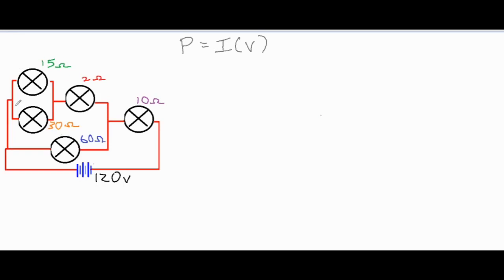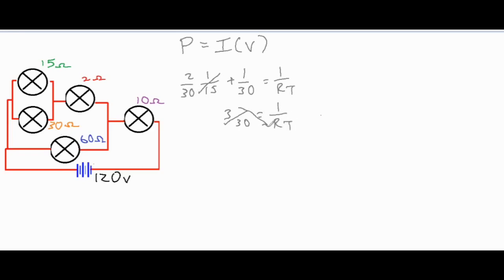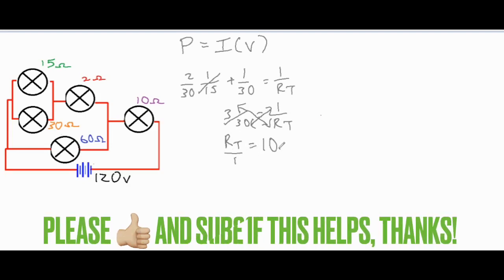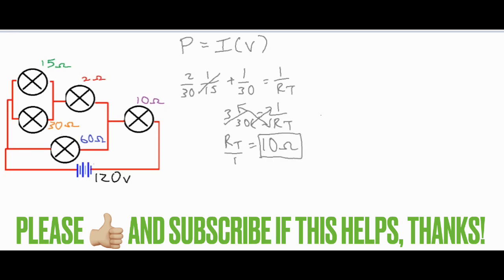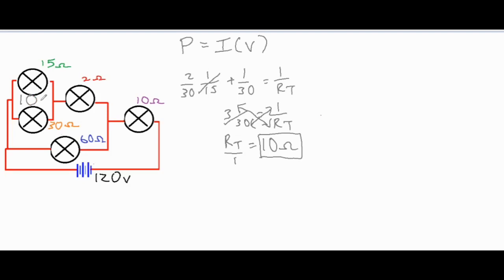Looking at our first parallel chunk, we have a 15Ω and 30Ω resistor. For a parallel circuit we add the inverses: 1/15 + 1/30 = 1/Rt. Using the lowest common denominator, that becomes 2/30 + 1/30 = 3/30 = 1/Rt. Cross-multiplying gives Rt = 30/3 = 10Ω. So this entire parallel chunk is equivalent to one 10Ω resistor.